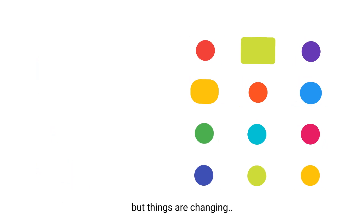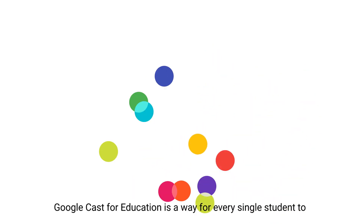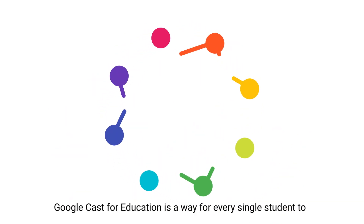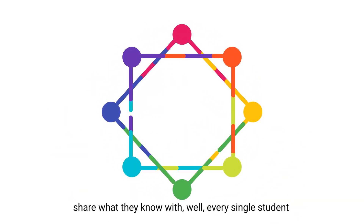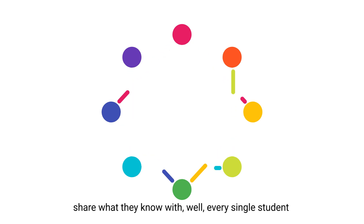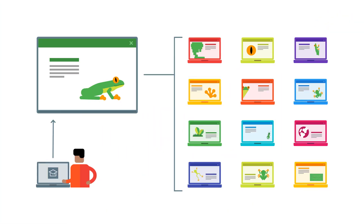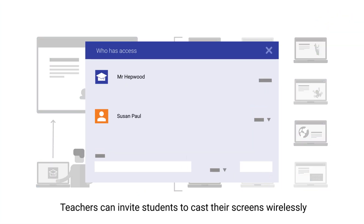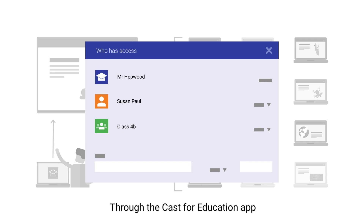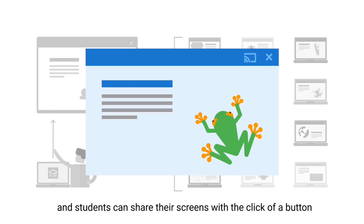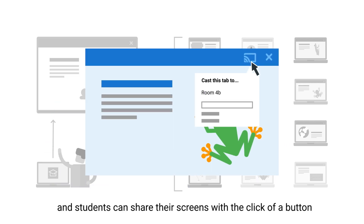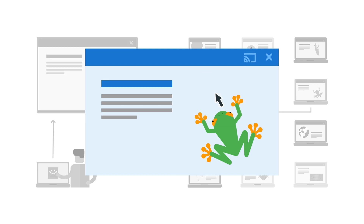But things are changing. Google Cast for Education is a way for every single student to share what they know with every single student. Teachers can invite students to cast their screens wirelessly to the entire room through the Cast for Education app, and students can share their screens with the click of a button.